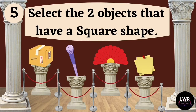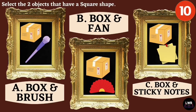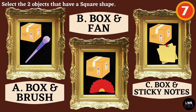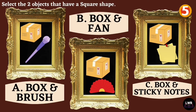Question number five. Select the two objects that have a square shape. Letter A, box and brush. Letter B, box and fan. Or letter C, box and sticky notes.